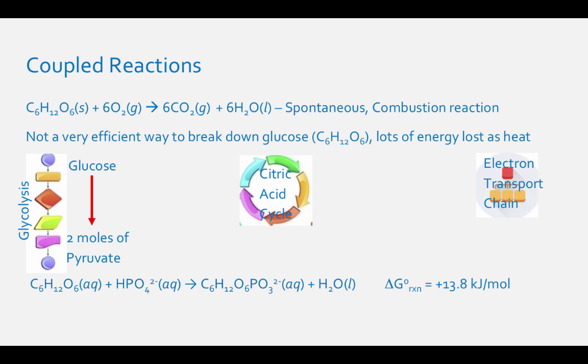This reaction is coupled with the hydrolysis of ATP-4-. This molecule is an energy store of your body. When this molecule breaks down into ADP3- and a hydrogen phosphate ion, HPO42-, this is a spontaneous process with a delta-G-0 reaction of negative 30.5 kilojoules per mole.